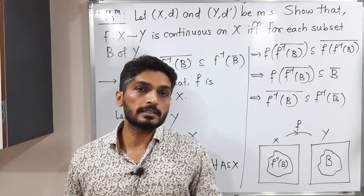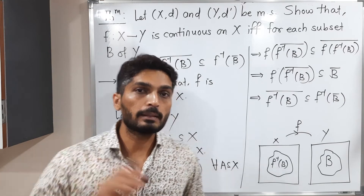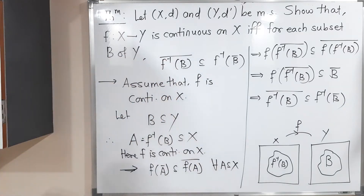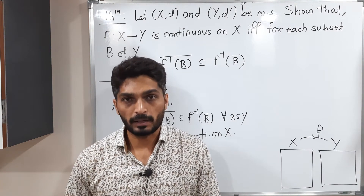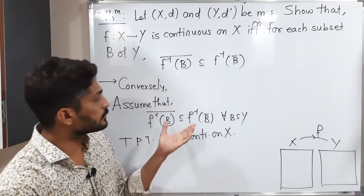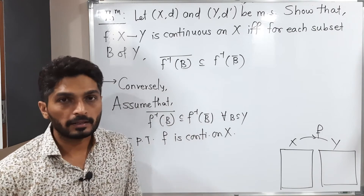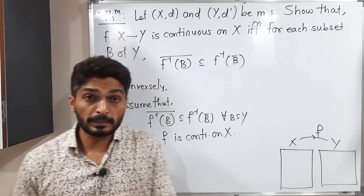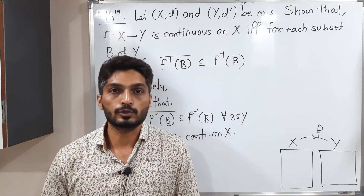So the first half of the proof is done. Now let us discuss the converse part. In the converse part, we assume the second condition holds for any subset of Y, and we have to prove that the function f is continuous on X.